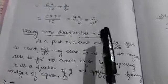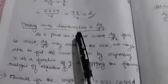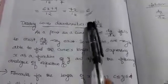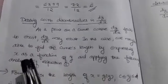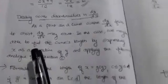Next, dealing with discontinuous dy/dx. If we have continuous f'(x), we can use the arc length formula: the integral of the square root of 1 plus f'(x)² dx.